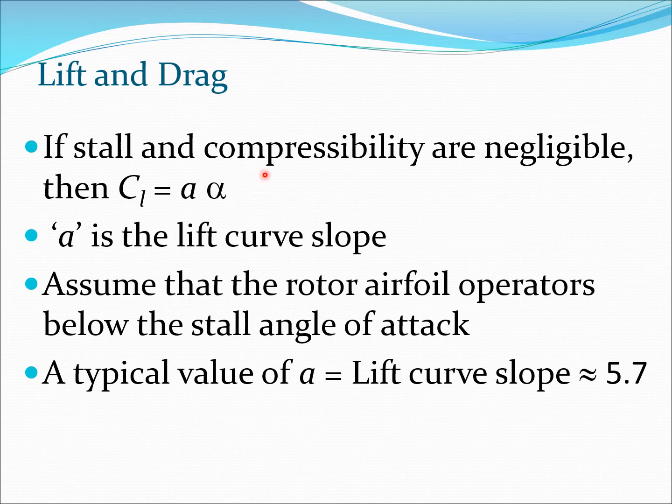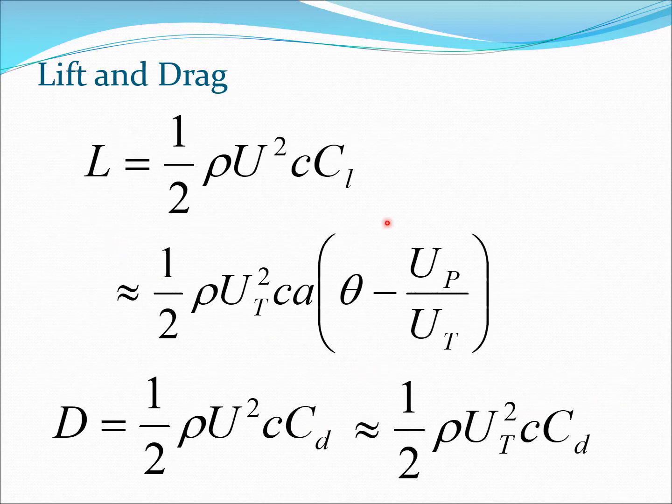One more approximation we'll make is that there is no stall and no compressibility. So essentially I can write CL as a linear model: CL is the lift curve slope a into alpha, which is the angle seen by the blade section. All these rotor airfoil properties are below the stall, and typical value of the lift curve slope a is 5.7. The lift expression is half rho u square c CL. I substitute a the lift curve slope into theta minus phi, where phi is up by ut, presuming small angle. I also replace u by ut here. For the drag expression, I get half rho ut square c CD.